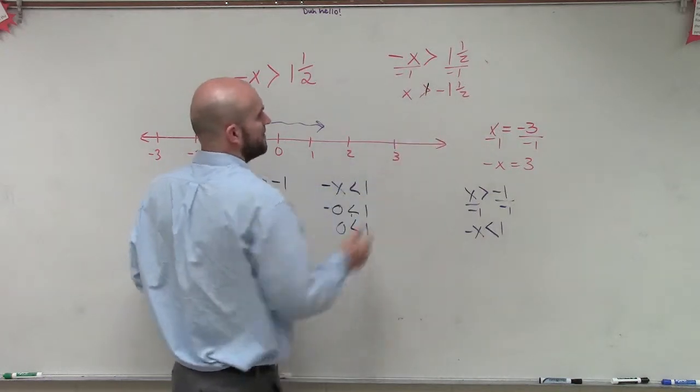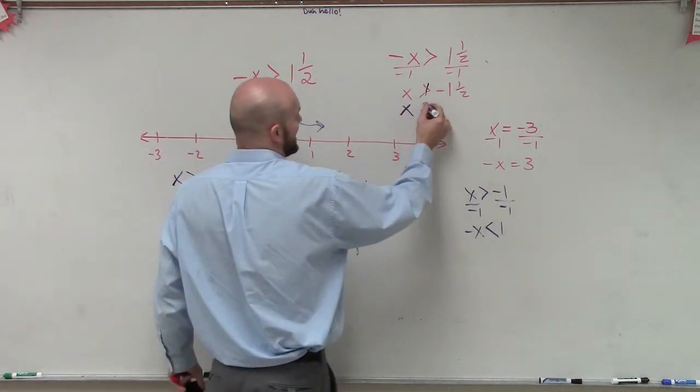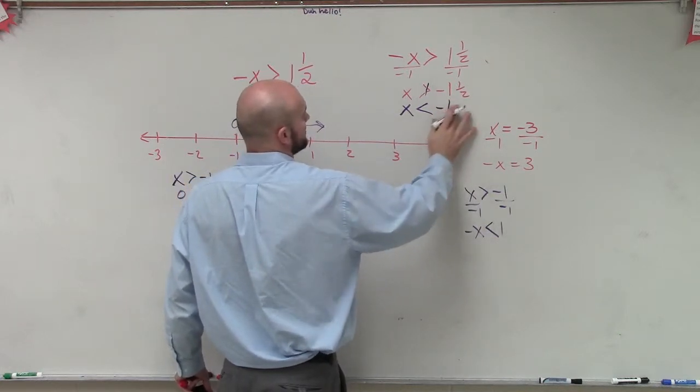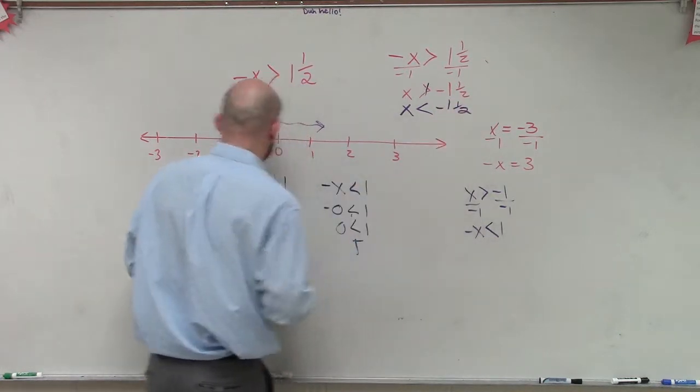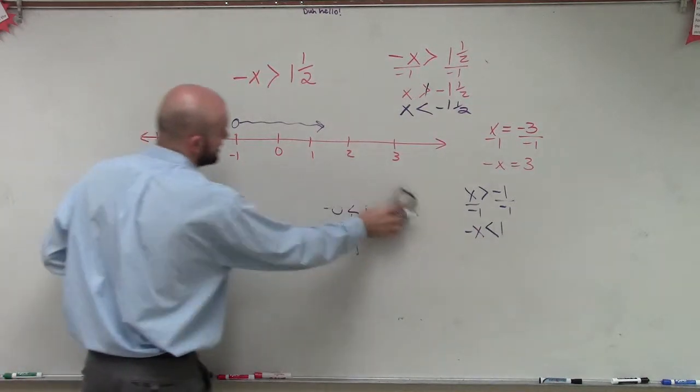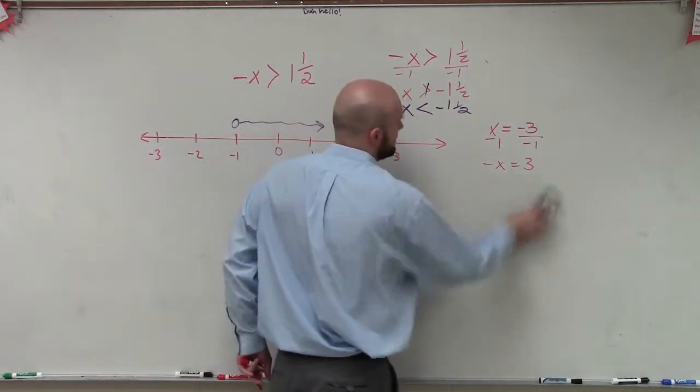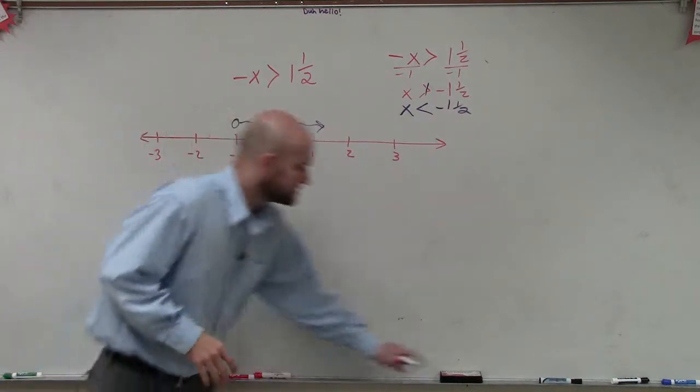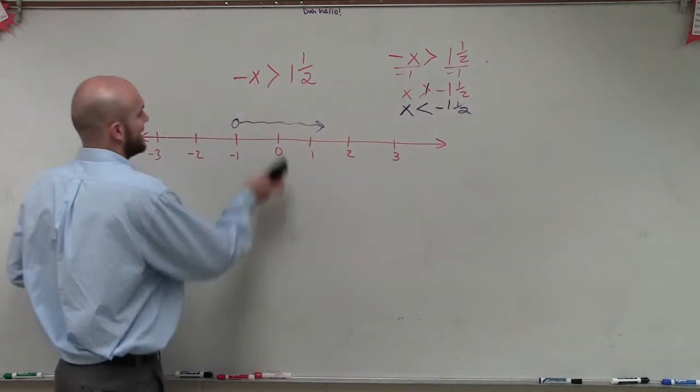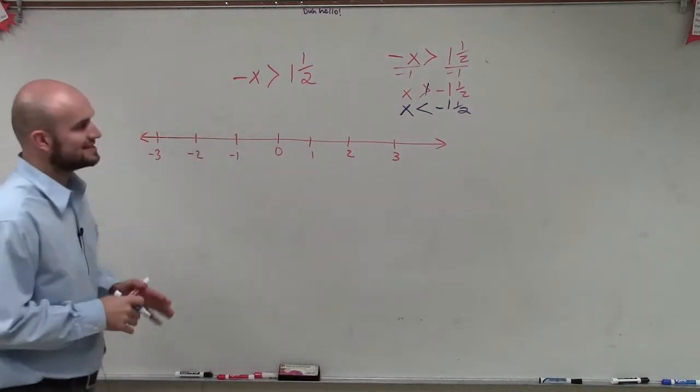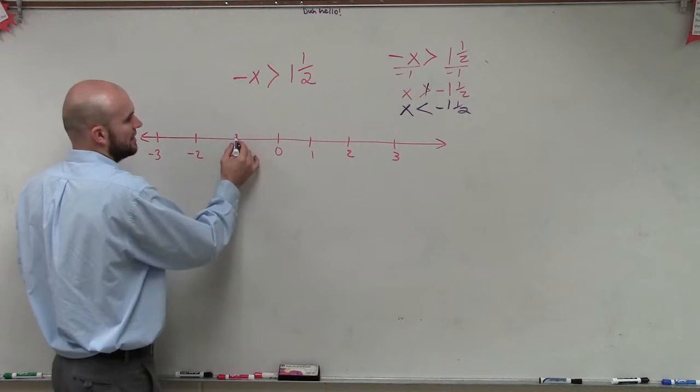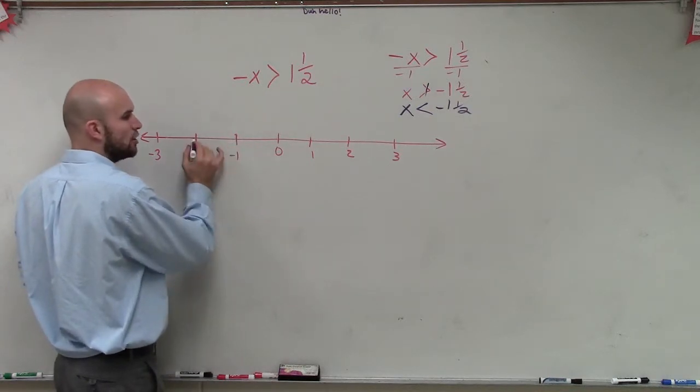Therefore, x has to be less than negative 1 and 1 half. Now we can convert that to an improper fraction if we like, but I'm going to leave it as a mixed number to help us graph. So let's go back to our problem. We now have x is less than negative 1 and 1 half. Let's go to negative 1, and then 1 half would be halfway over to negative 2, so we're going to have a point right here.